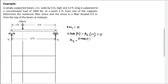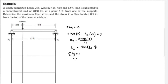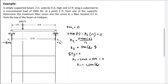Setting the equation equal to zero: R2 equals 2,000 multiplied by 3, divided by 12, giving R2 equal to 500 pounds upward. Using the summation of forces in the y-direction equal to zero: R1 minus 2,000 plus 500 equals zero, so R1 is equal to 1,500 pounds.